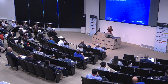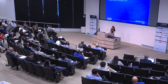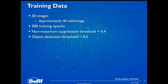The training data consisted of 30 images, each containing approximately 40 cells per image. We trained for 300 epochs. The non-maximum suppression threshold was 0.4 and the object detection threshold was 0.5.